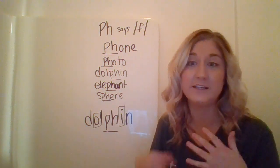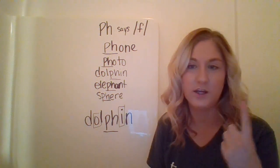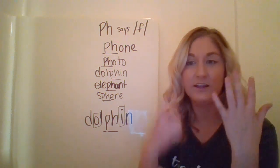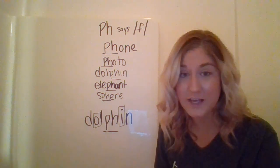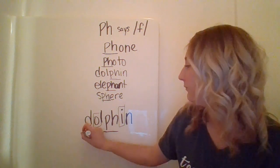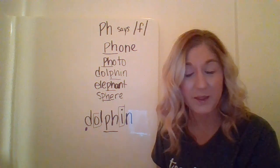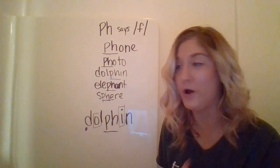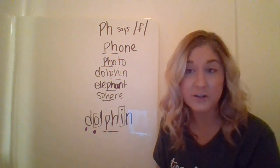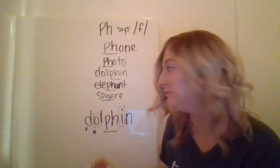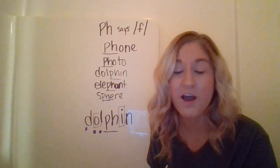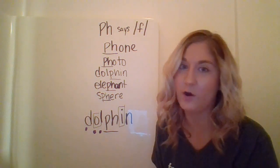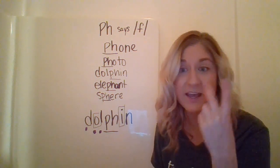Now I want to find all my sounds and write my sound dots. Let's go through and say each sound: d, /ah/, l, /f/, /ih/, n — dolphin. So I have six sounds. My first sound was /d/, which is D. My second sound was /ah/, which is O. My third sound is /l/, which is L. My fourth sound is tricky because it says /f/, but I know it's not the letter F — I know that P and H are working together to say /f/.